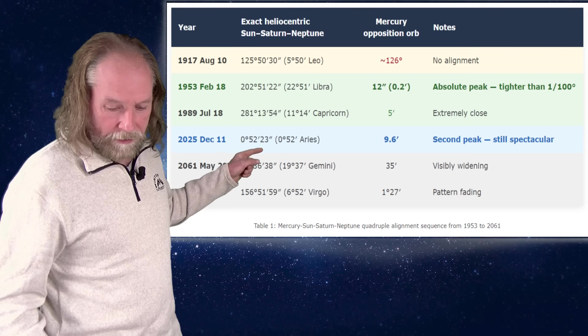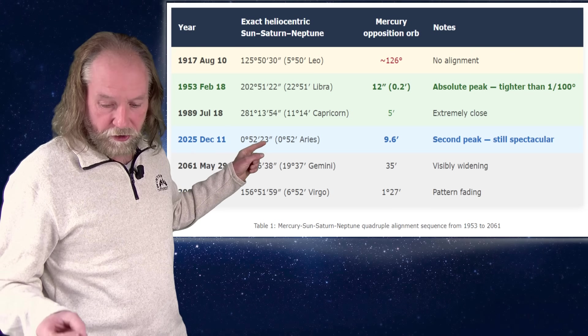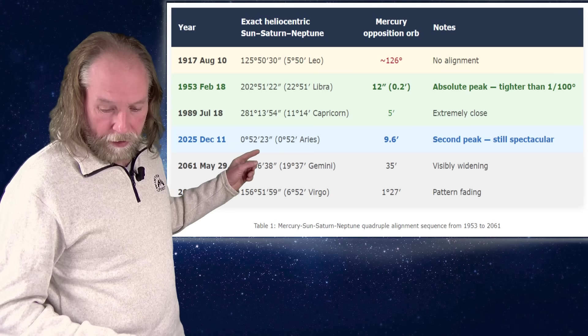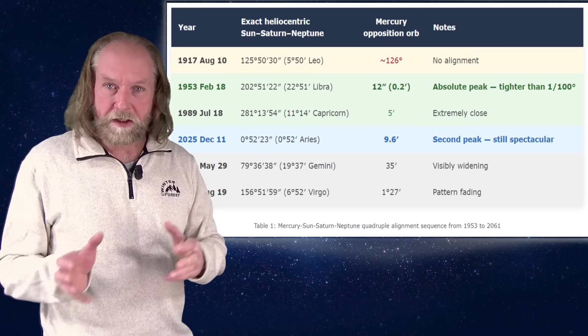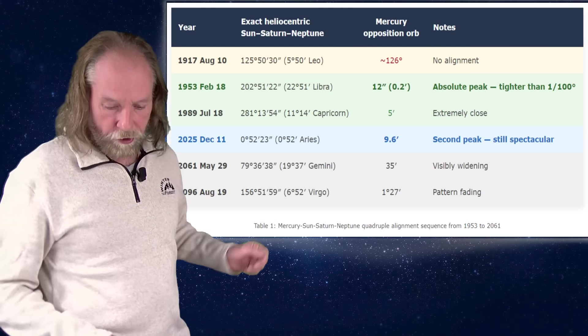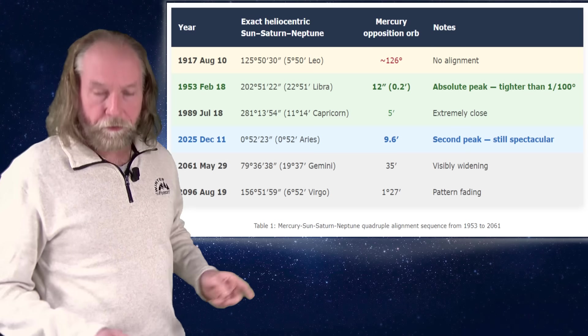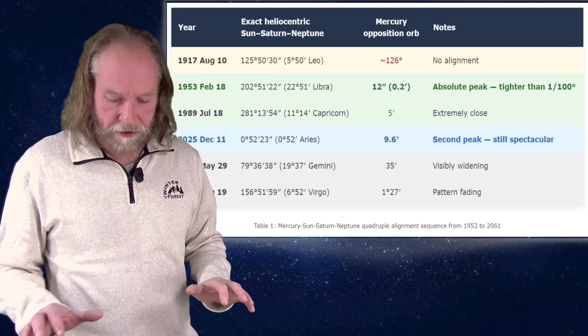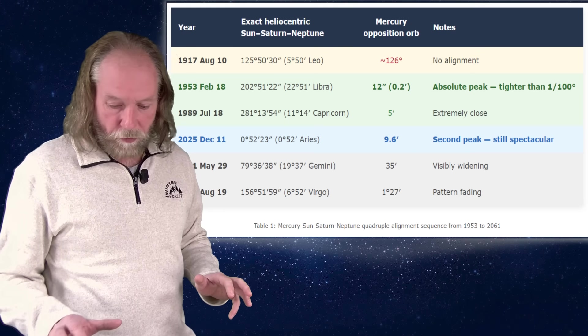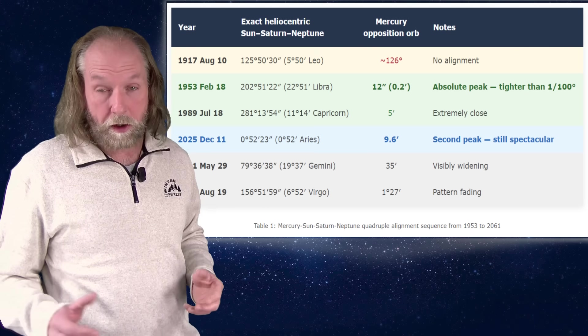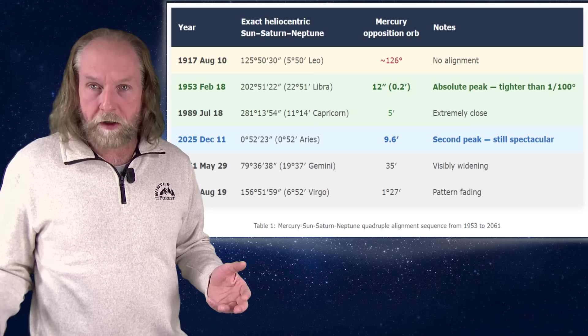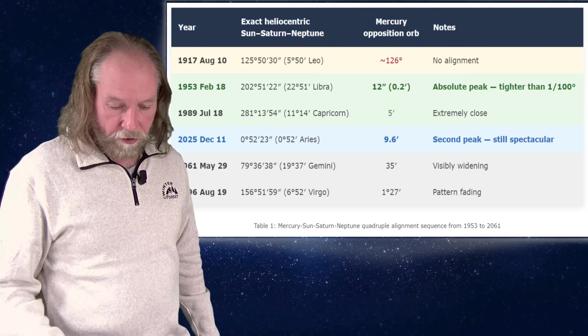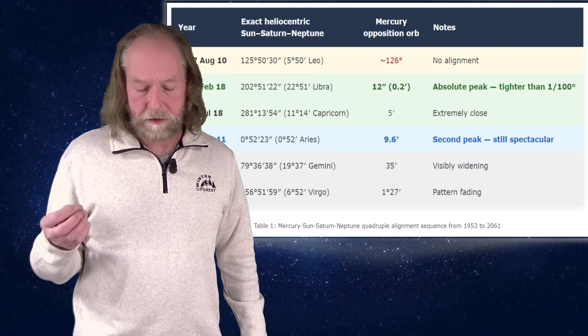And then also in 1989, with only five minutes extremely close. 2025, second peak, still spectacular, with only 9.6 minutes difference that Mercury is away from the grand conjunction. And then in 2061, it's 35 minutes. And there we see that this phenomenon actually fades. And then in 2096, we already are at one degree, but still pretty close. So over a period of 150 years, we see an extremely close pattern, a quadruple pattern with Mercury, Sun, Saturn and Neptune.